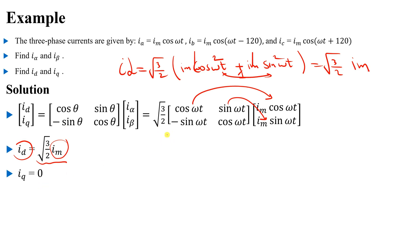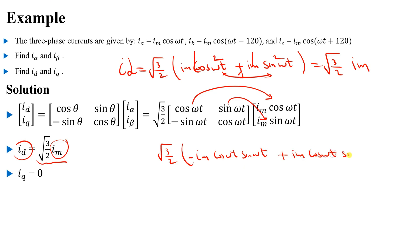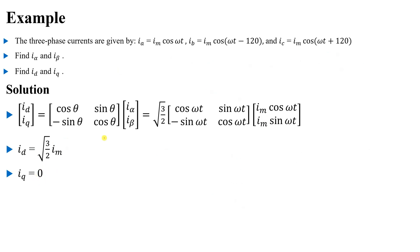For i_q: applying the matrix row gives −sin(ωt)·Im·cos(ωt) + cos(ωt)·Im·sin(ωt), scaled by √3/2. These two terms are opposite to each other, so they cancel, giving i_q = 0.